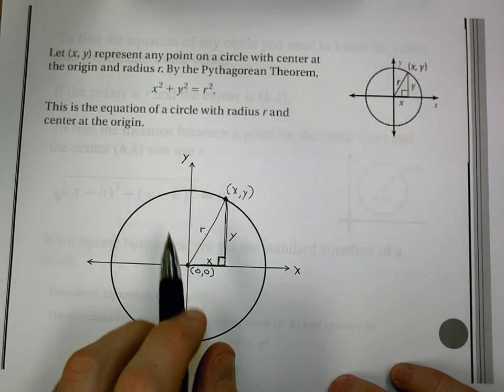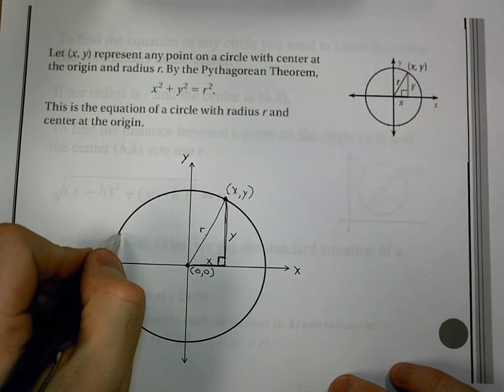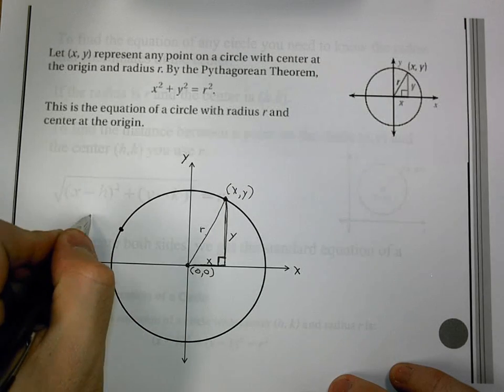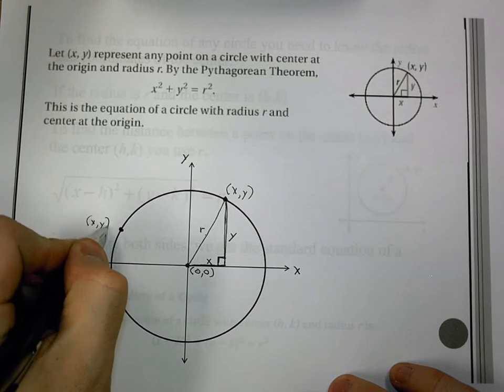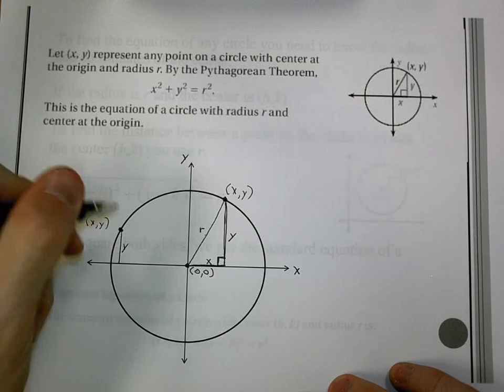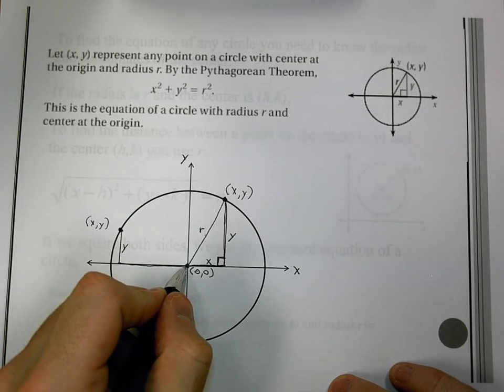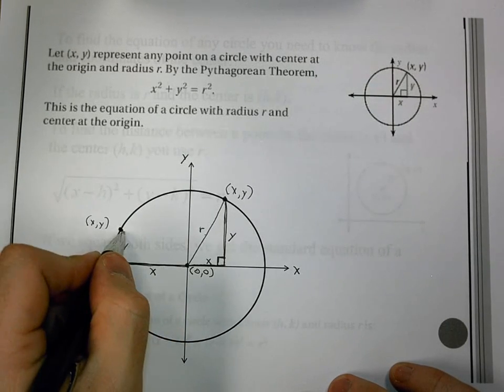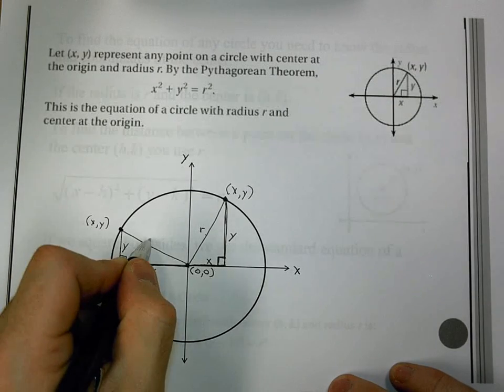So let's maybe think of another point. Let's think of a point out here. It's still (x,y), a new (x,y). Now this one, I still have a y value, I still have an x value, and I would also have a radius.